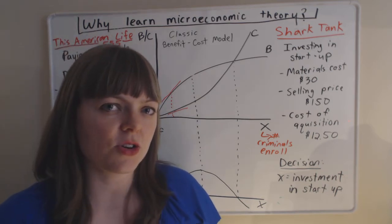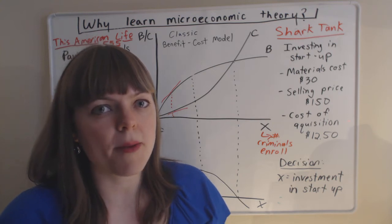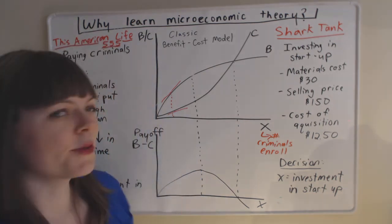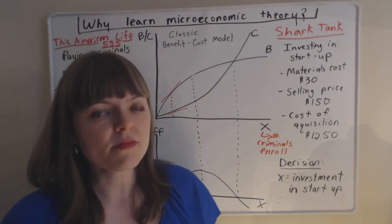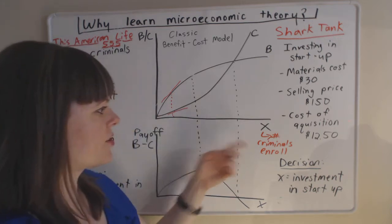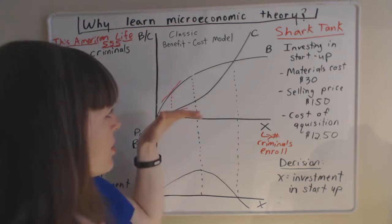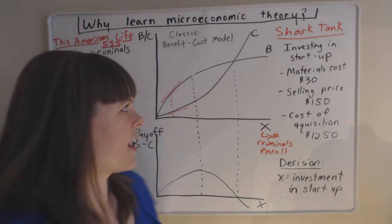To go out and find new potential criminals to enroll in the program might be more expensive, might be harder. You might have to knock on more doors. The police might actually have difficulty finding more criminals to enroll in the program. In which case you could have a very quick increase in the marginal cost. That's not what I think is going to happen.